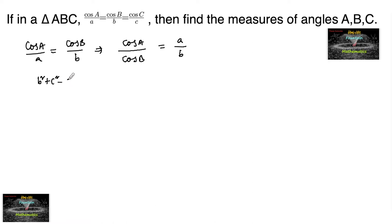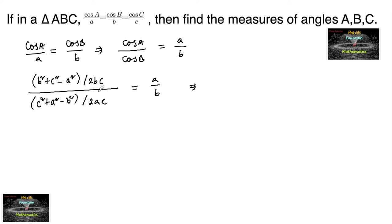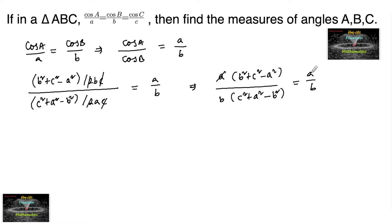Since we have the cosine rule, (B² + C² − A²) / 2BC divided by (C² + A² − B²) / 2AC is equal to A upon B. We can cancel the 2 and 2, and C and C, whereby we get A times (B² + C² − A²) upon B times (C² + A² − B²) is equal to A upon B.